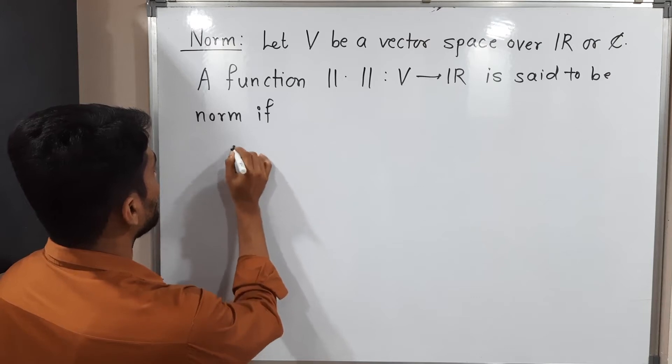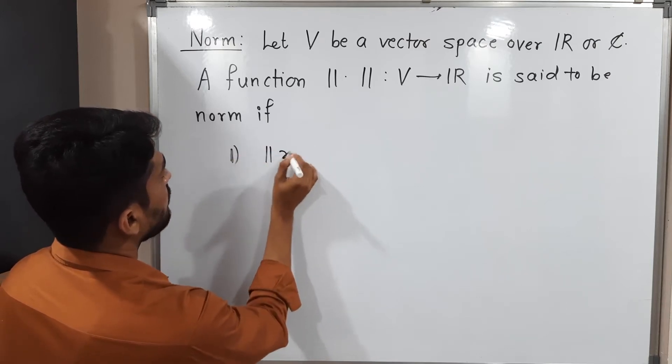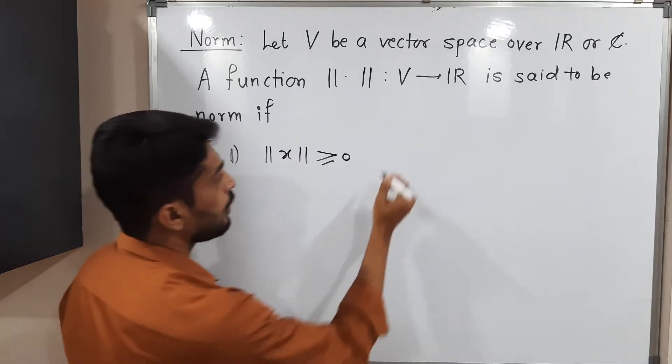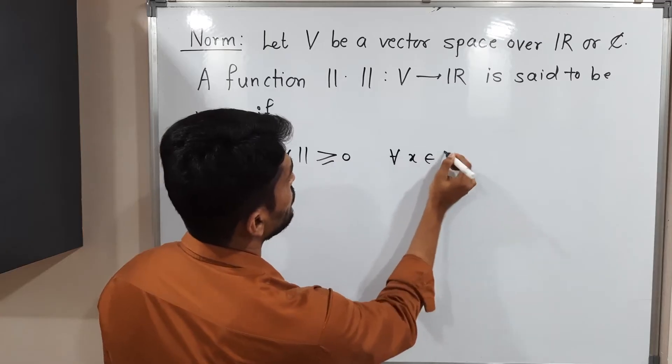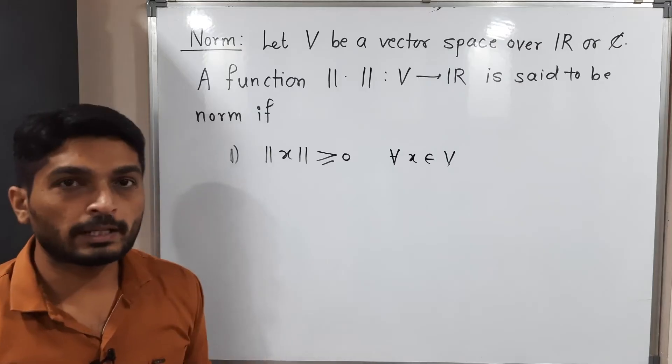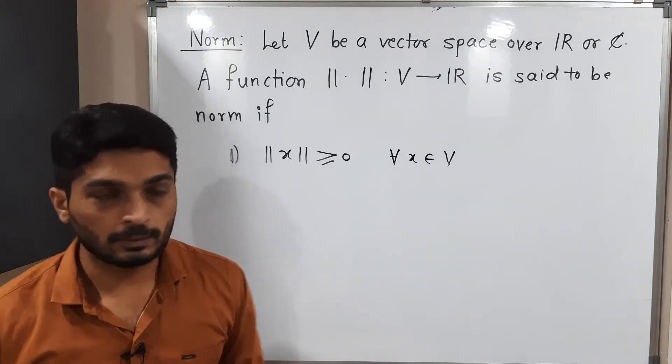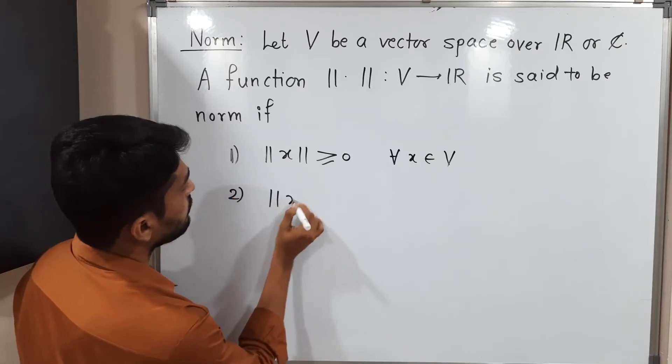The first condition is: norm of X is greater than or equal to 0 for all X belongs to V. That means for every element of that vector space V, norm should be non-negative.